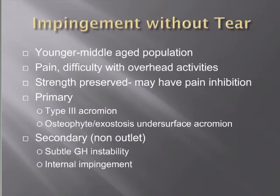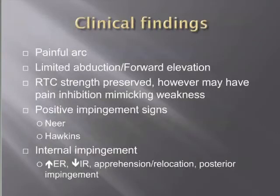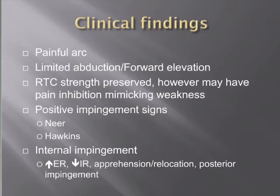Clinical findings: these patients may have a painful arc and often have limited abduction or forward elevation, though rotator cuff strength should essentially be preserved. They have positive impingement signs — the signs of Neer and Hawkins. In internal impingement, they will have an increase in external rotation of around 10-15 degrees, a corresponding decrease in internal rotation, often signs of anterior instability, and can be posterior impingement positive.